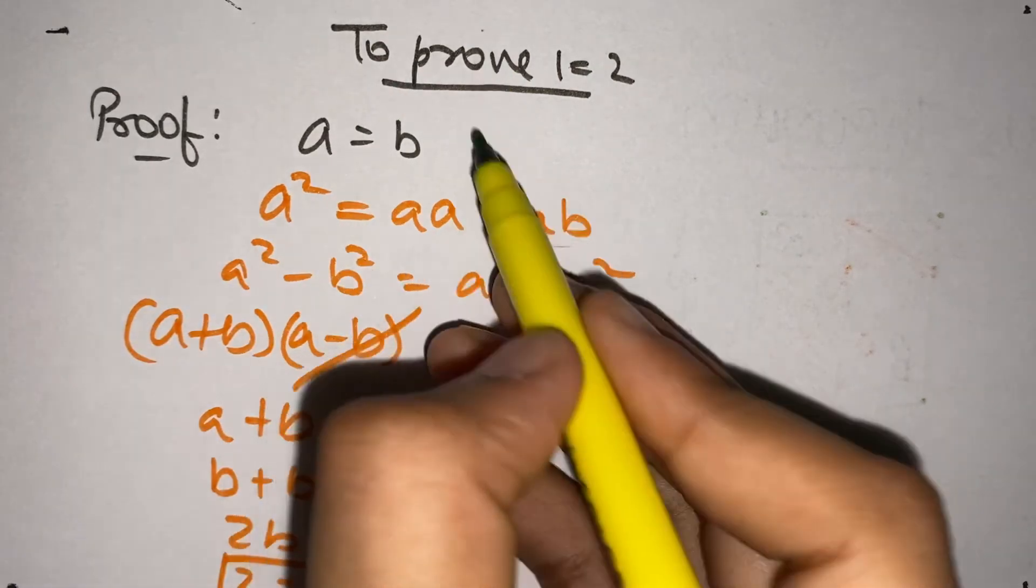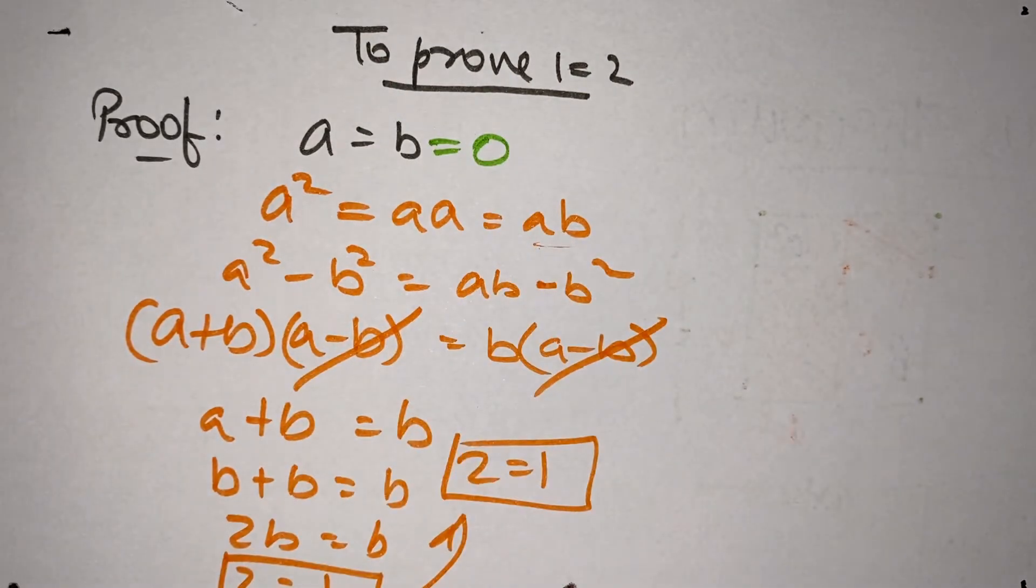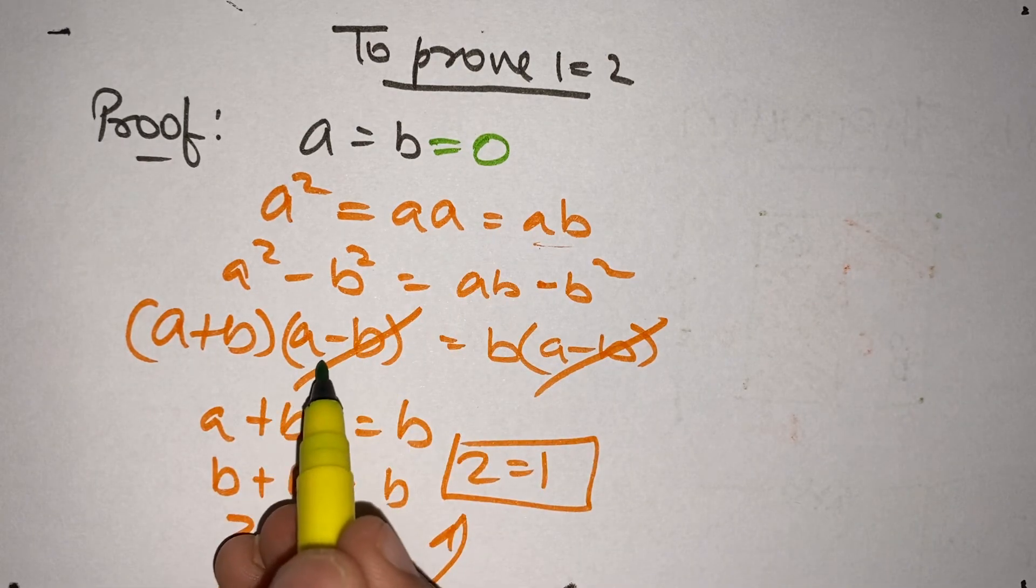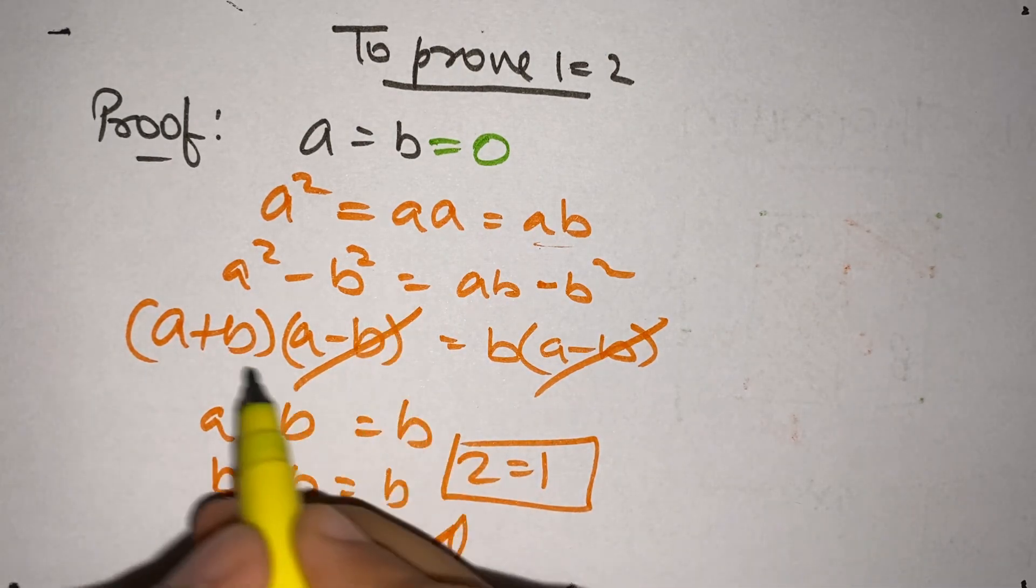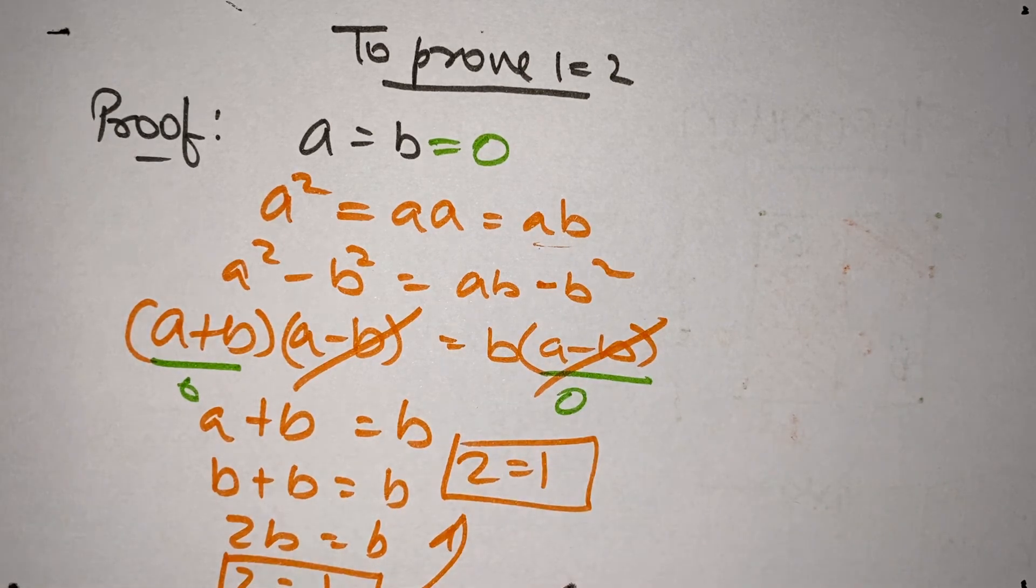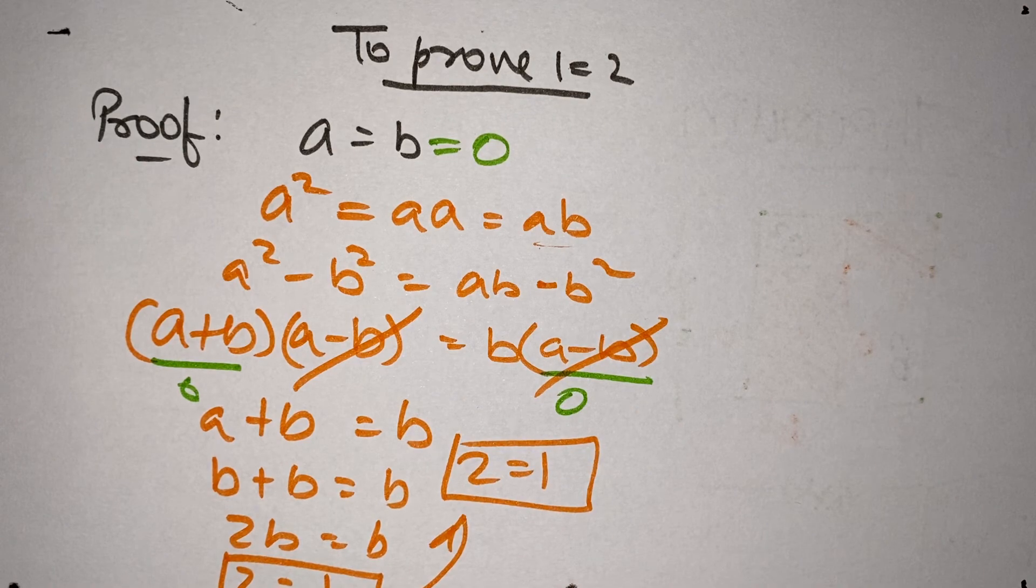If we let A equal to B equal to 0, then A minus B, which is basically 0, dividing by 0 is not a good idea. Whenever we divide something by 0, we end up into lots of problems.